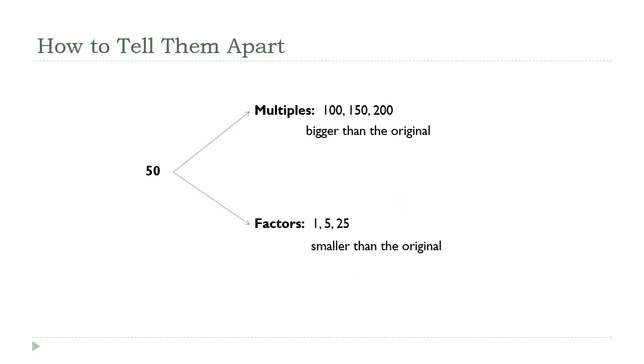A quick rule I use to keep these two straight, because they are very similar to each other, is just to remember that we get multiples by multiplying by an integer. So multiples are always going to be bigger than the original number.